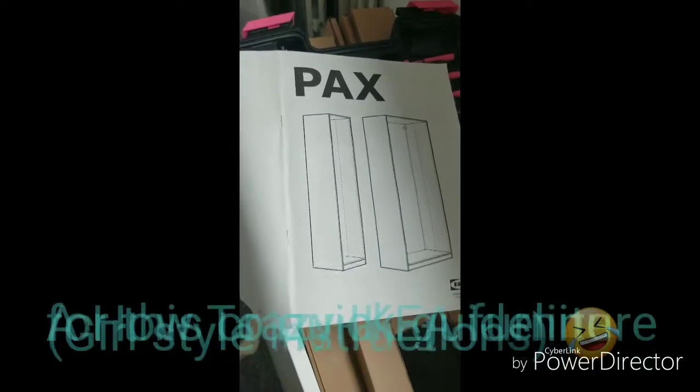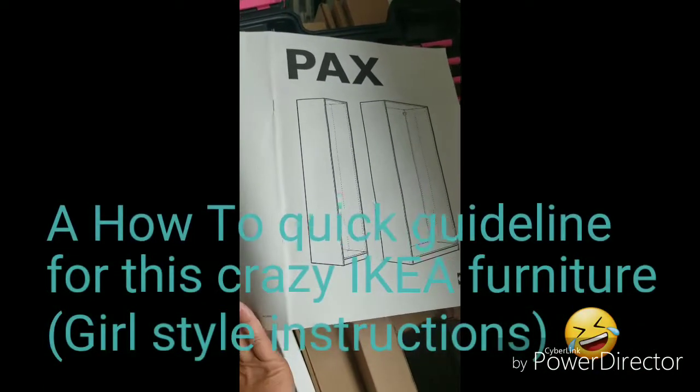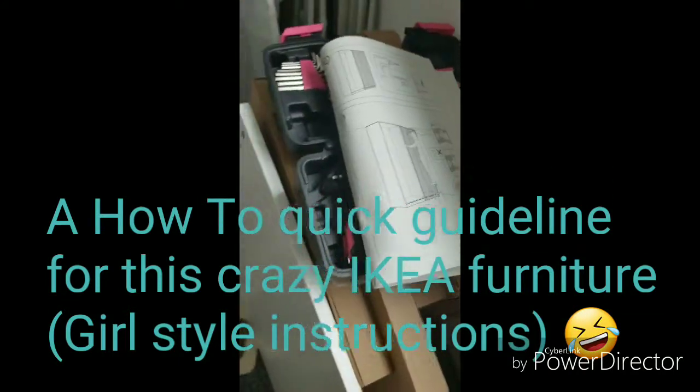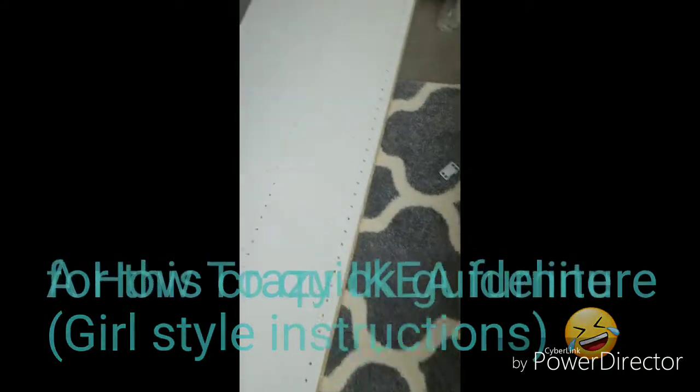This is instructions on how to put together the PAX wardrobe from IKEA. Follow directions number one. Number two, fix a glass of wine.